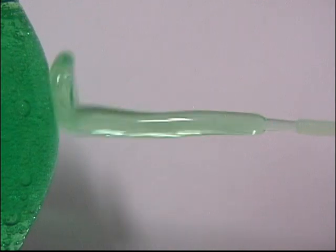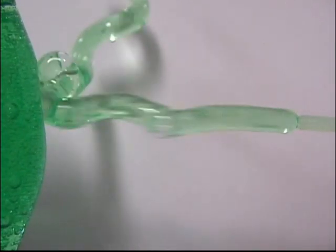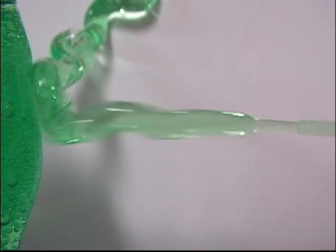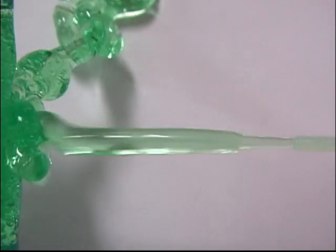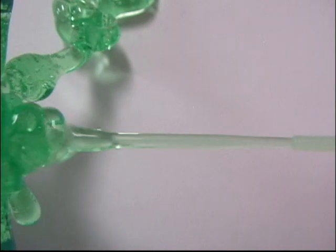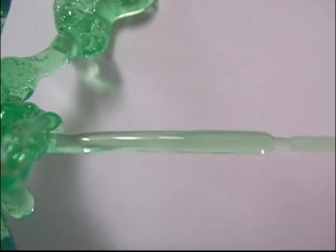Here we squirt the viscoelastic fluid out a nozzle that is about two millimeters in diameter and we can see the onset of die swell where the diameter of the liquid stream puffs up by about a factor of two.